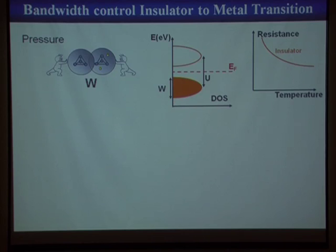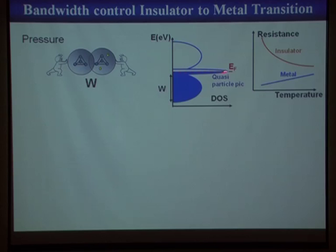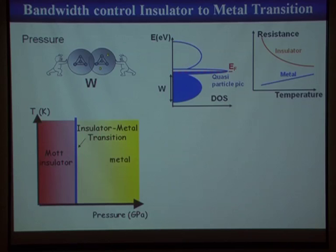If you look at the density of states of a correlated metal, it is a little bit different from a simple metal — you have a quasi-particle peak at the Fermi level. Under pressure, the phase diagram of temperature versus pressure shows a Mott insulating state stable up to a critical temperature — this is the Mott line — and on the right part of this phase diagram you find the metallic state.